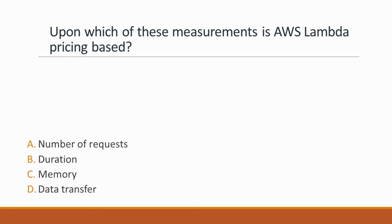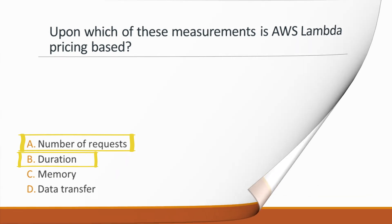Next question: Upon which measurements is AWS Lambda pricing based? Options: A. Number of requests, B. Duration, C. Memory, D. Data transfer. Correct answers are option A and option B. With AWS Lambda, you are charged based on the number of requests for your functions and the duration — the amount of time it takes for your code to execute.